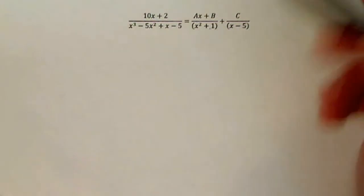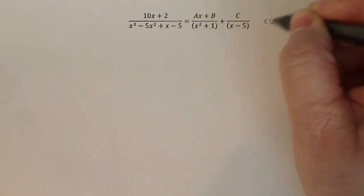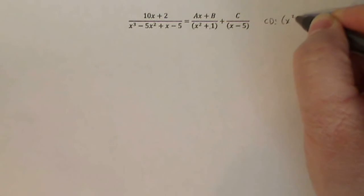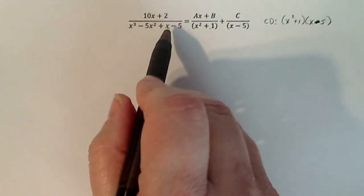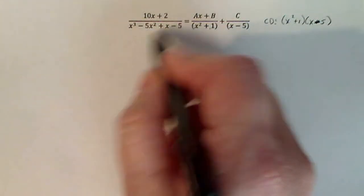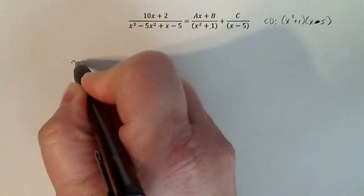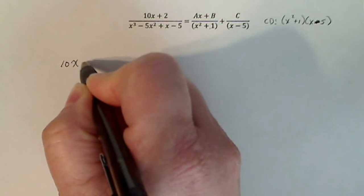So here we go. What you have to do, and we did this in class, is multiply both sides by the common denominator, which of course is x squared plus one times x minus five. All right, so if I multiply this side by x squared plus one times x minus five, it'll cancel with the denominator and I'll be left with 10x plus two.